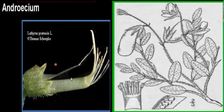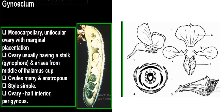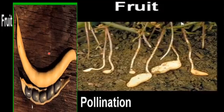Androecium: consists of 10 stamens enclosed by the keel petals. Anthers are two-celled, i.e., dithecous, and monadelphous in the case of Clitoria. Gynoecium: monocarpellary, unilocular, ovary with marginal placentation. Ovary usually has a stalk called the gynophore, arising from the middle of the thalamus cup. Ovules many, anatropous. Style simple. Stigma simple. Ovary is inferior and perigynous. Fruits are a legume.